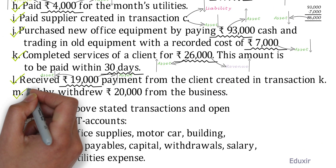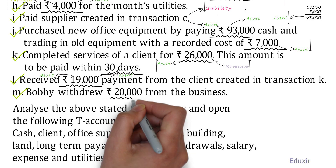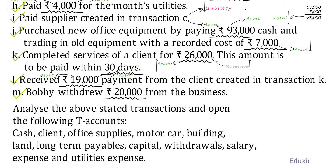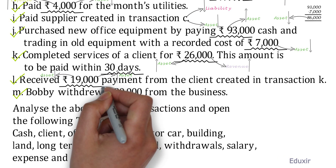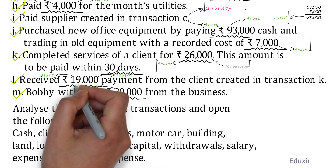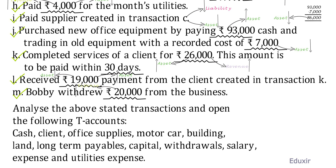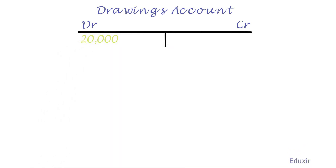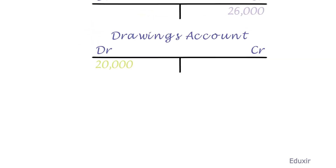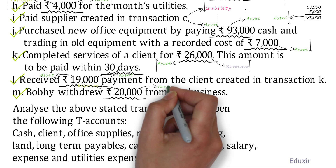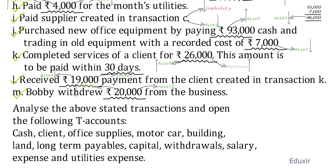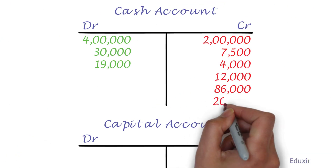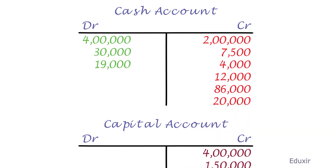Let us now deal with transaction M. Bobby has withdrawn 20,000 rupees from the business. Withdrawals are expenses — this transaction creates an expense named drawings. The rule to record an increase in expense is to debit the expenses account, so we debit the drawings account with 20,000 rupees. As the drawings are made in cash, this reduces the asset named cash. The rule to record the decrease in the asset is to credit the cash account, so we credit the cash account with 20,000 rupees. That covers transaction M.